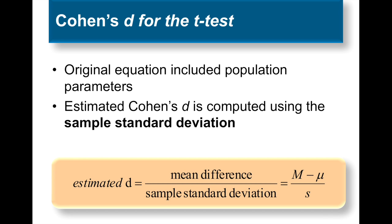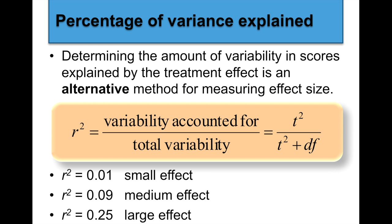Estimated Cohen's d is the mean difference — mean minus mu — divided by the sample standard deviation. We've done Cohen's d before, but this is looking a little different for our t-tests. Another way to find effect size is percentage of variance accounted for — you're determining the amount of variability in scores explained by the treatment effect as an alternative method for measuring effect size. So you can do Cohen's d or percentage of variance accounted for.